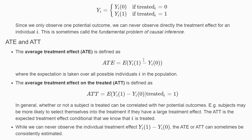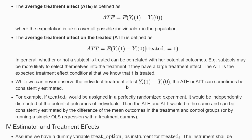The ATE also takes into account people who would always reject intensive counseling, while the ATT focuses only on those willing to accept it. Consider an experiment where treatment is assigned in a perfectly randomized way, completely independent of potential outcomes — so every job seeker assigned to intensive counseling receives it and cannot reject it, and those not assigned don't receive it.